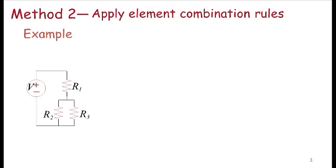In this example, I would like to use element combination rules to solve for the following situation. So I have a little circuit here with a voltage source and three resistors. And let's say I care about finding the current I through that branch. So how do I go about doing it? So let's start applying element combination rules.